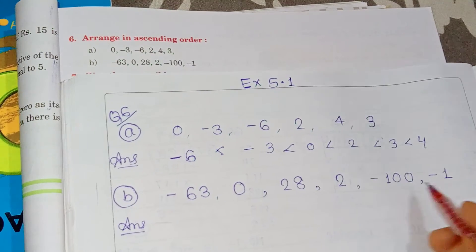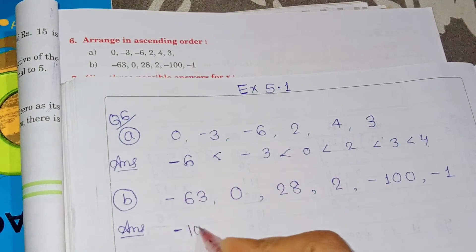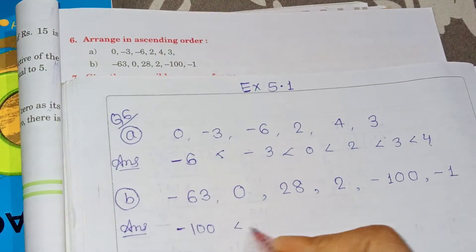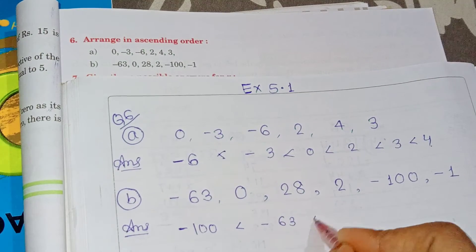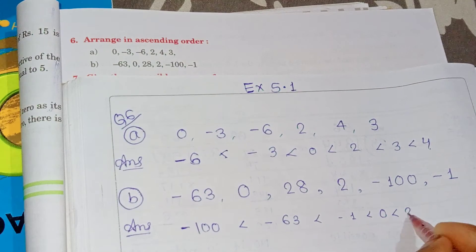Minus 100 is the smallest, then minus 63, then minus 1, then 0, then 2, then 20.